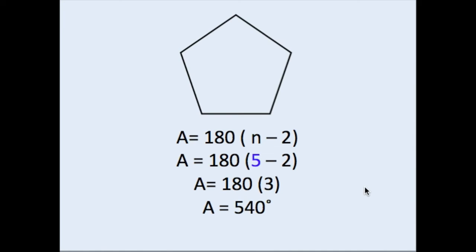Next, we have a pentagon, so notice we're starting off with the formula again. Counting the number of sides, 1, 2, 3, 4, 5. Substituting in the 5 for the n. Next, 5 minus 2 is equal to 3. 180 times 3 is equal to 540 degrees. So any five-sided figure would have 540 degrees as the angle sum.